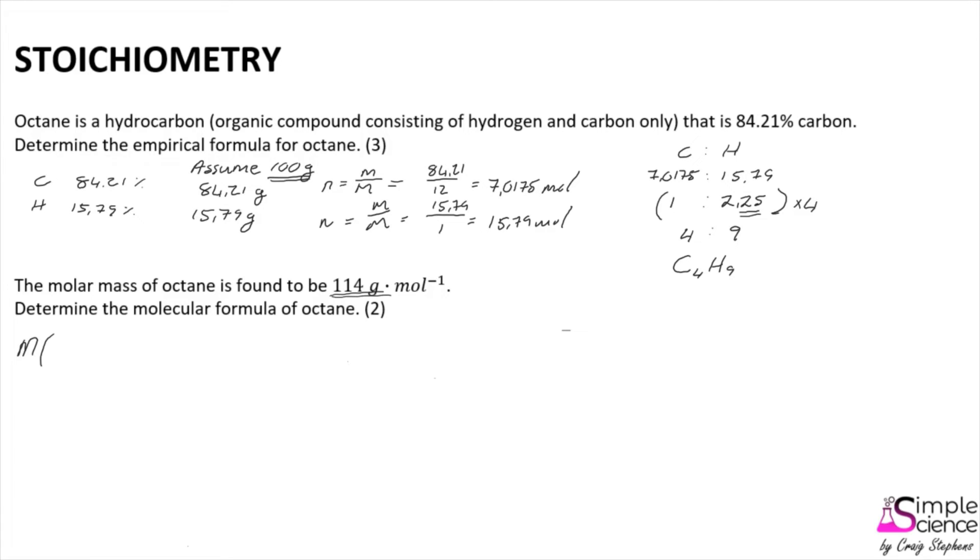And so our starting point here is always to calculate the molar mass for the empirical formula that we have calculated, C4H9. And we see that that is 57 grams per mole.